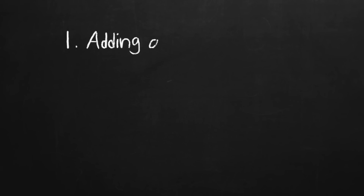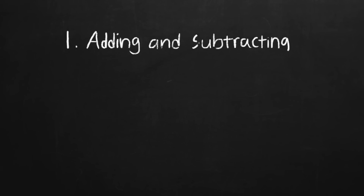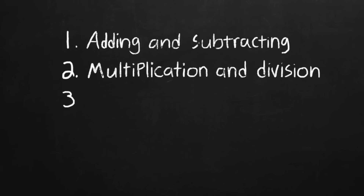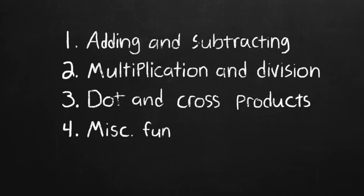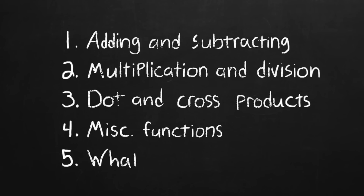First, we'll talk about adding and subtracting, and how that moves the point in space. Then we'll talk about using multiplication and division to scale that arrow. Then two other types of vector multiplication called the dot product and the cross product, and when to use them. Lastly, I'll show some of the lesser known operations for anybody who's curious, and then we'll wrap it all up at the end with a short list of the most important things to remember.